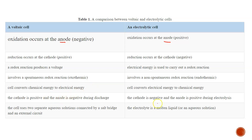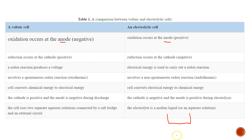During discharge of a secondary cell (galvanic mode) the cathode is positive and anode is negative; during electrolysis (recharge) the cathode is negative and anode is positive. In a galvanic cell the two half-cells must be kept separate, connected via salt bridge and external circuit. In an electrolytic cell we typically have a single container with a molten or aqueous electrolyte. If an aqueous electrolyte is used, we must consider competition at the electrodes.